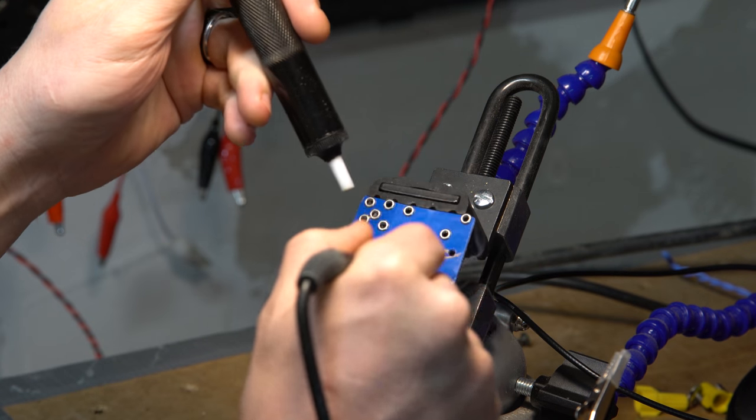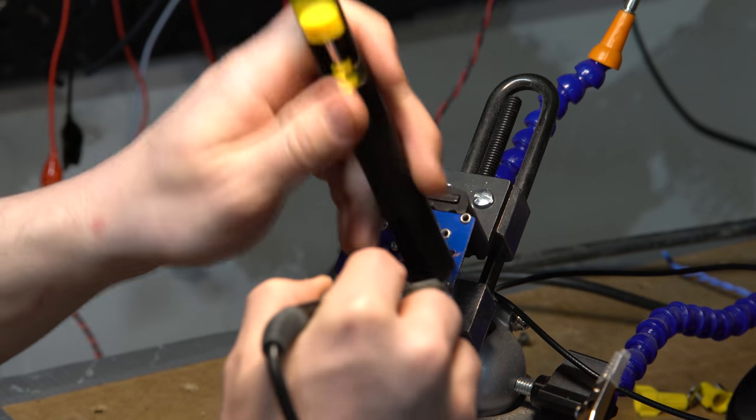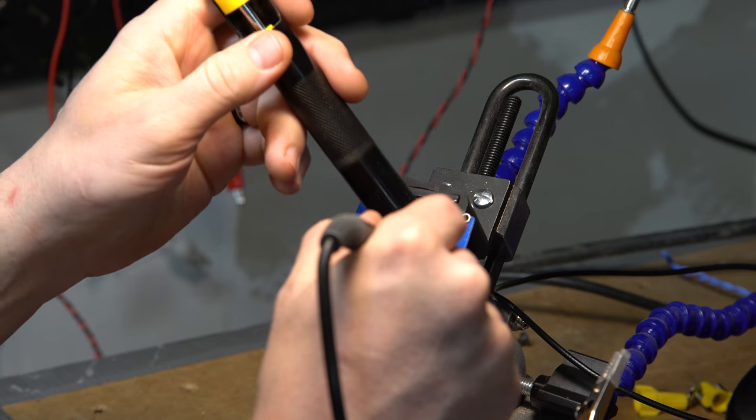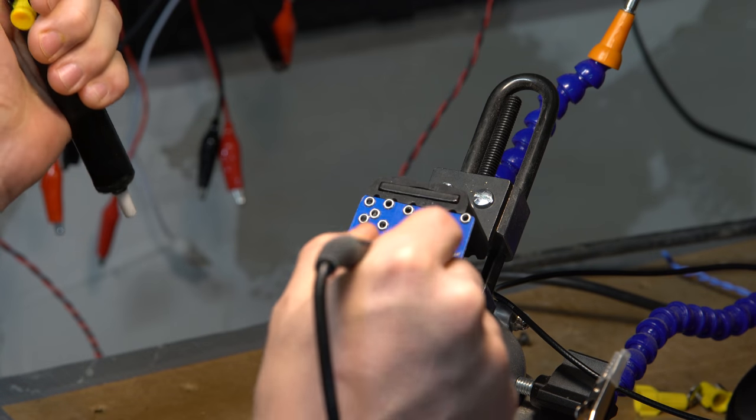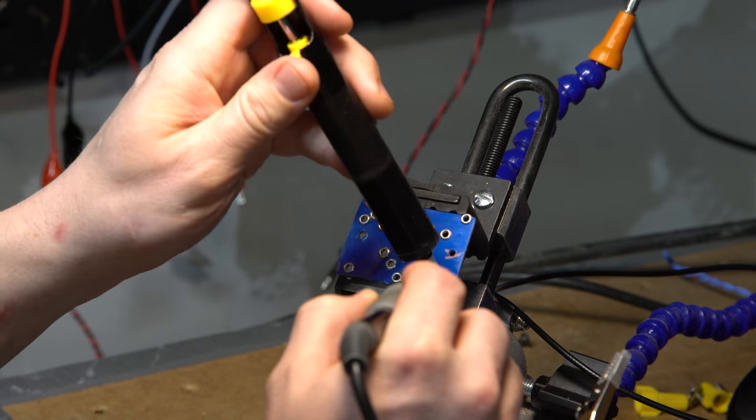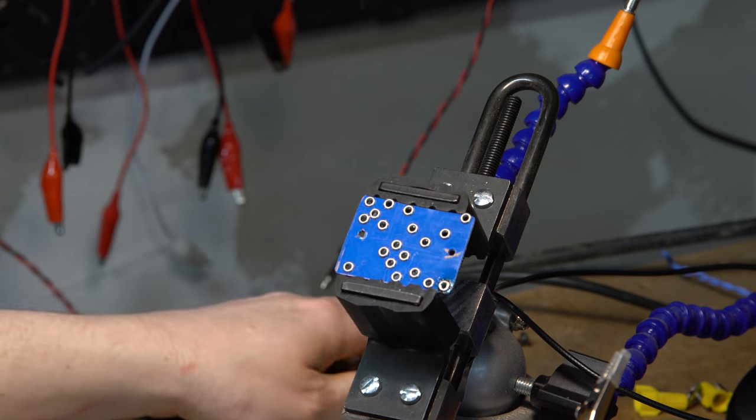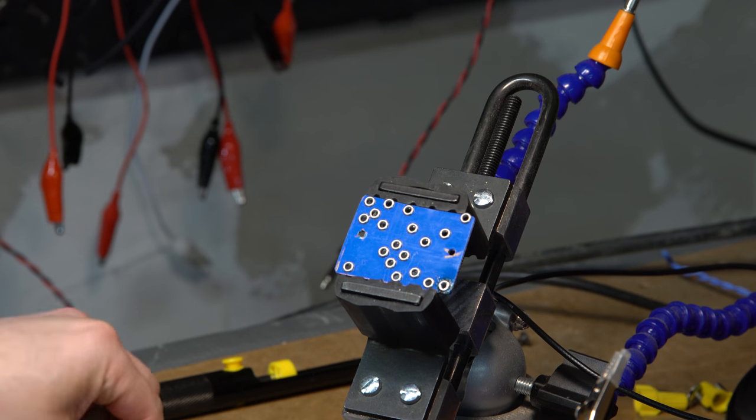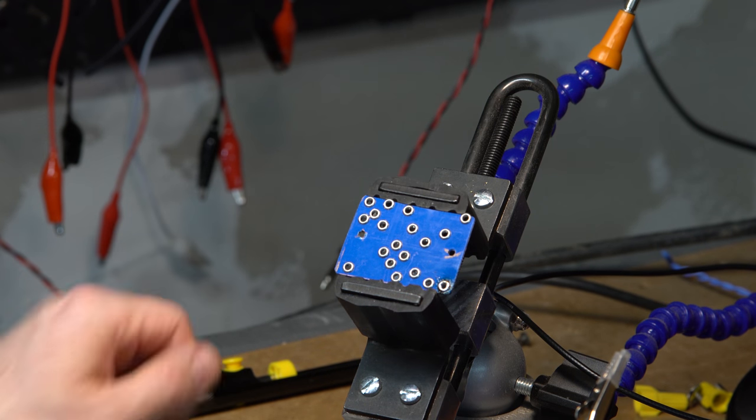Solder sucker is really nice at getting a lot of these kinds of things completely clean. I keep slipping past it. There we go, that's a lot better. You can see that's also really good at cleaning out a hole and it leaves behind the old solder and comes out quickly.